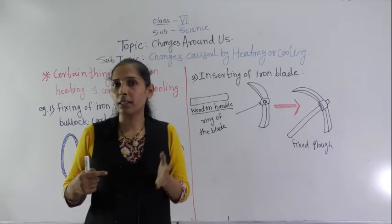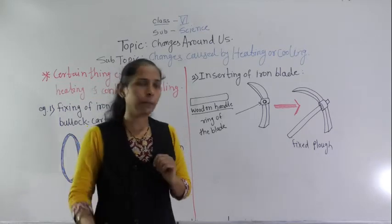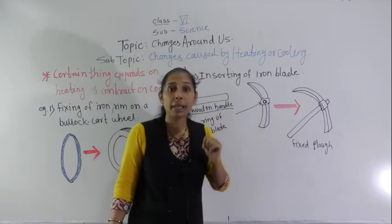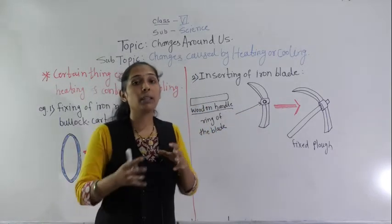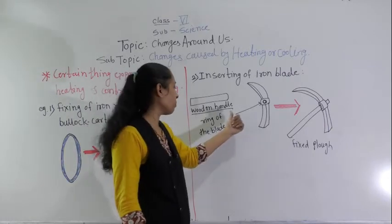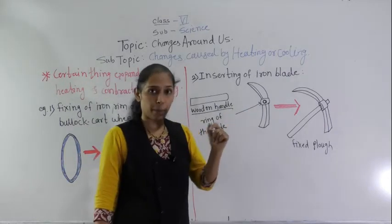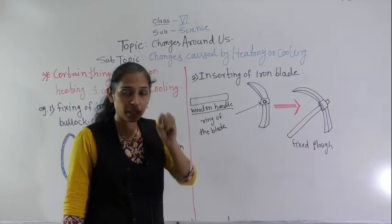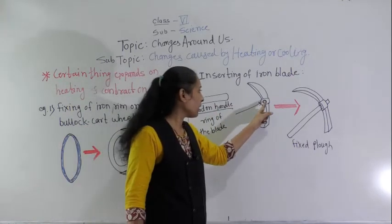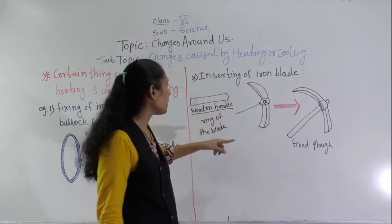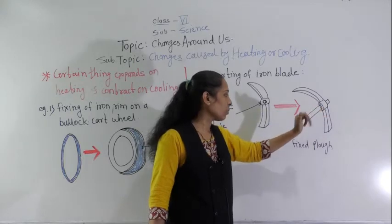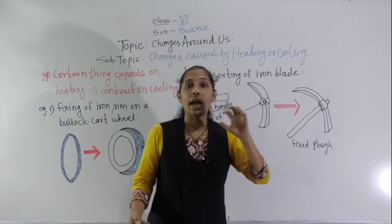They provide heat to the blade, and because of the heat it expands. The ring of the blade expands, and due to expansion it increases in size. On this increased hole, we can easily fit the wooden handle.